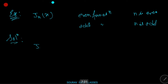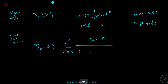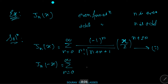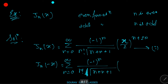Solution: We know that Jₙ(x) = Σ (r=0 to ∞) [(-1)^r / (r! · Γ(n+r+1))] · (x/2)^(n+2r). Replacing x by −x, we get Jₙ(−x) = Σ (r=0 to ∞) [(-1)^r / (r! · Γ(n+r+1))] · (−x/2)^(n+2r).